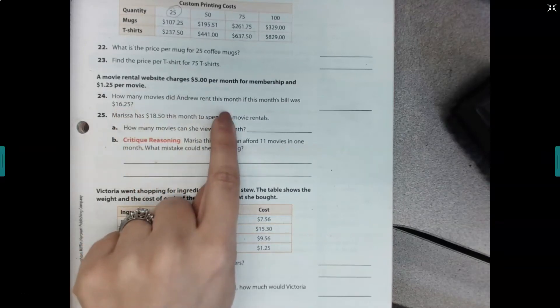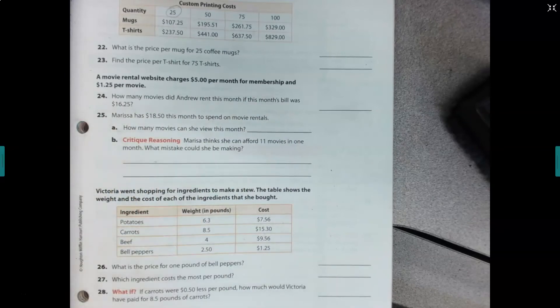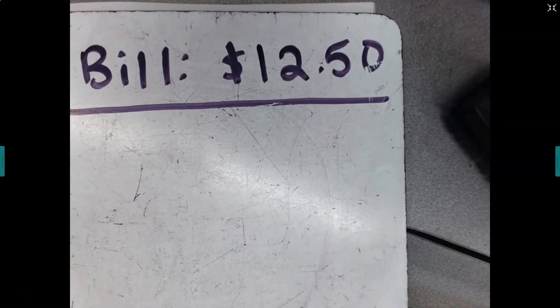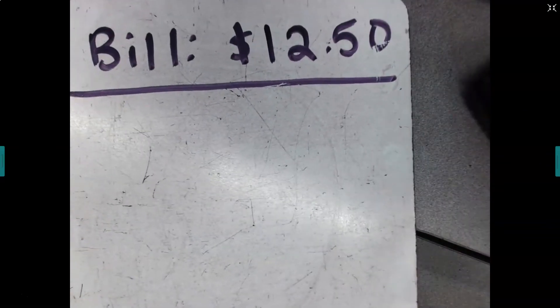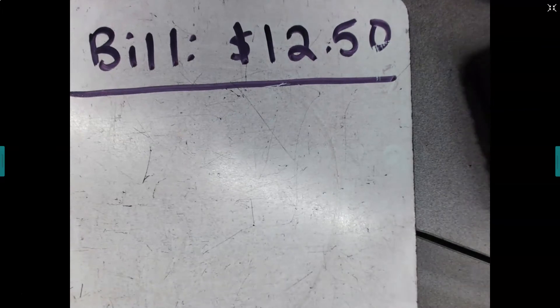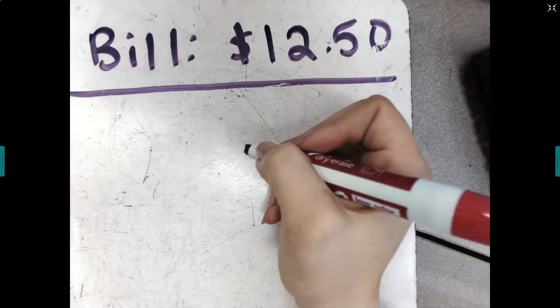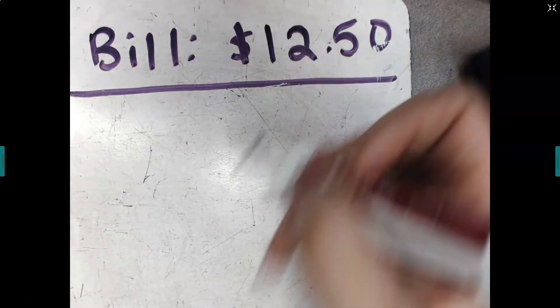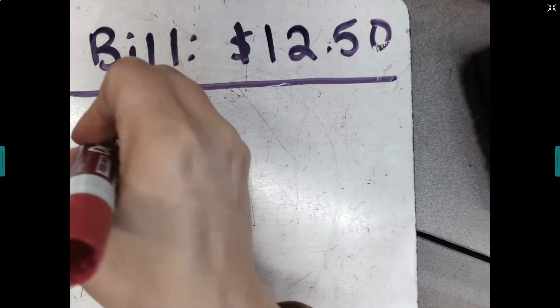So it says, how many movies did Andrew rent this month if this month's bill was $16.25? Well, we're going to do a different version, just like the last time. What if your bill was $12.50?